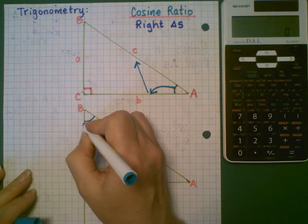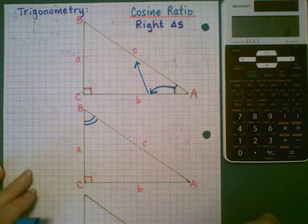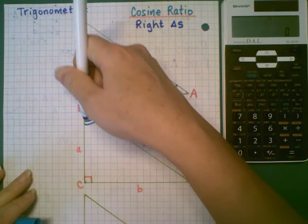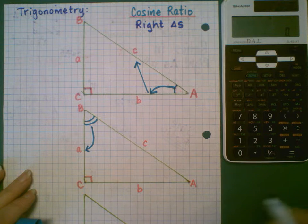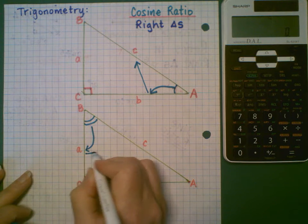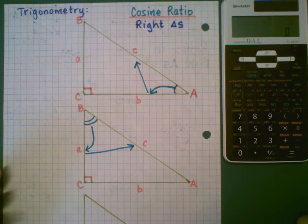If I was looking at it from the point of view of angle B, looking out this way, I'm going to go to the leg right next door, or adjacent, and then across to the hypotenuse.